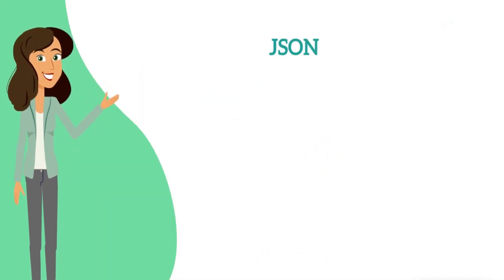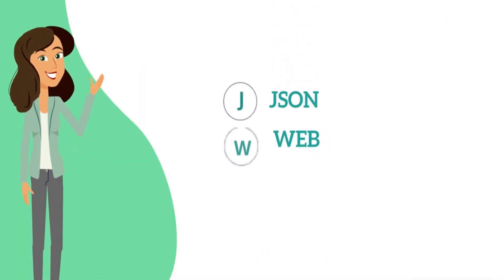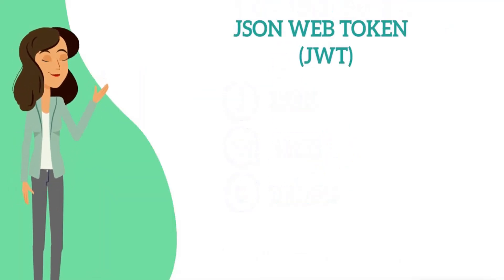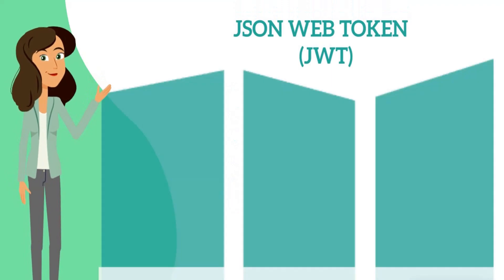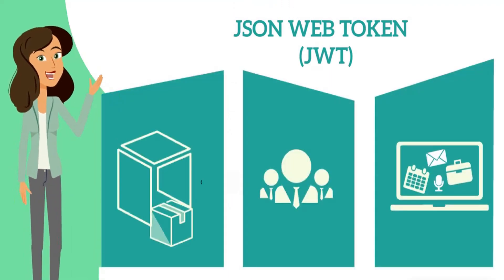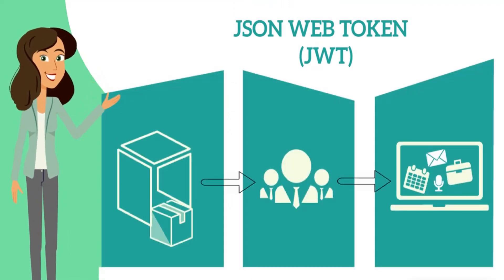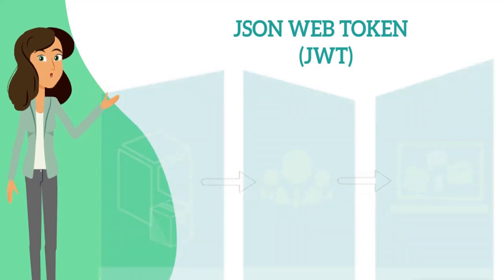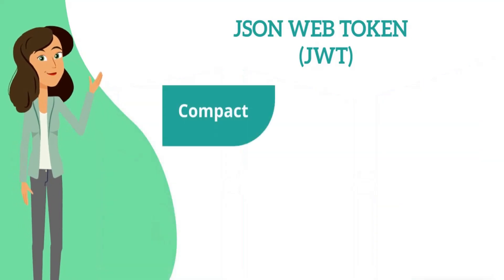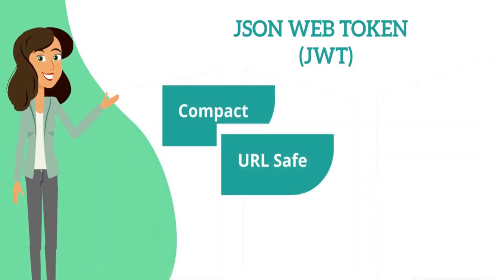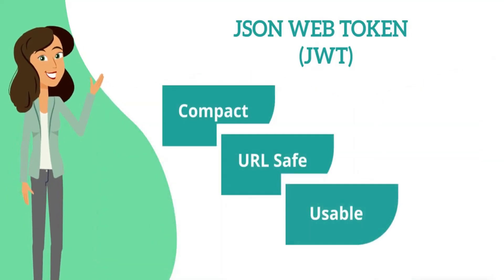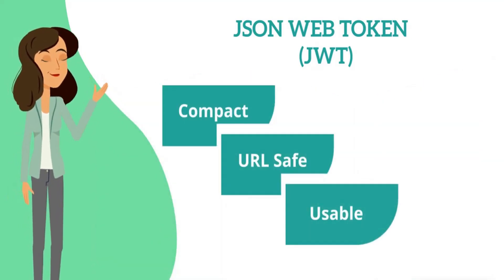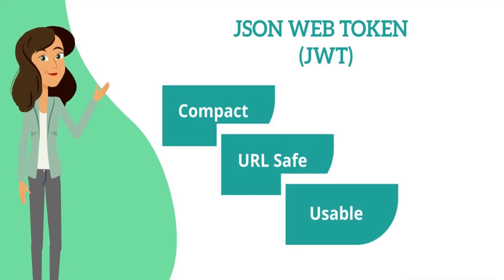JWT stands for JSON Web Token. JSON Web Token is a JSON-based open standard for passing claims between parties in a web application environment. The tokens are designed to be compact, URL safe, and usable, especially in a web browser single sign-on context.